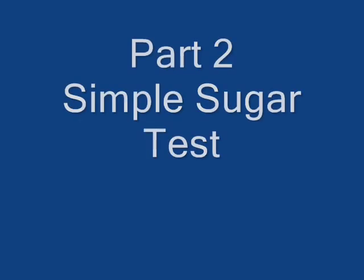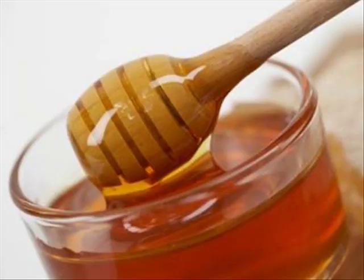The Benedict's test is a general test for simple sugars, but not every sugar can be detected by this test — just simple reducing sugars. Things like honey, which is just glucose, can easily be detected. Things like table sugar, however, cannot.